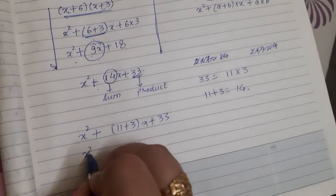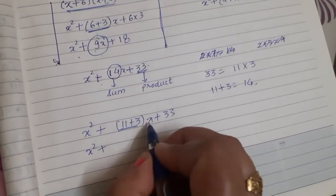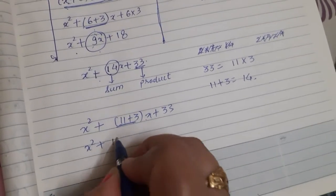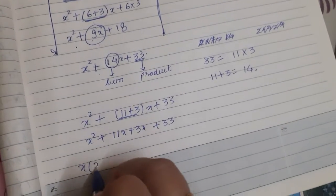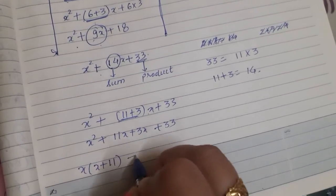Now, x square. Open this bracket and give the variable x to both the terms: 11x plus 3x plus 33. Now, x common, it will be x plus 11. And 3 common, it will give us x plus 11.